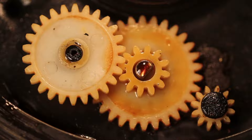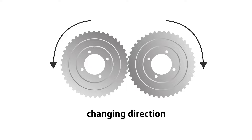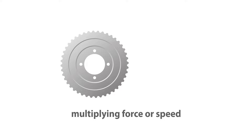Gears are simple machines composed of interlocking toothed wheels. They have two main functions. The first is changing direction: turning one gear turns the other in the opposite direction, altering the force's direction.